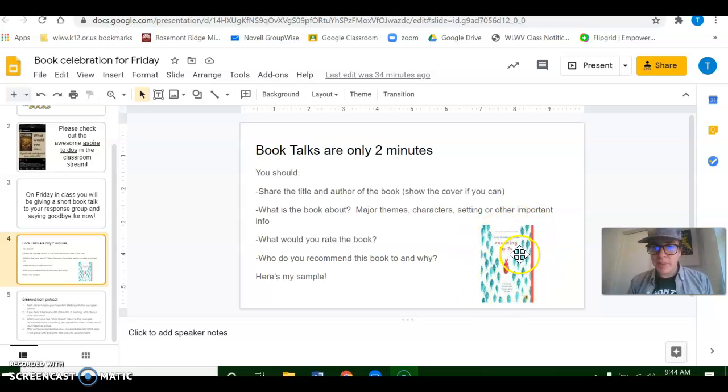Hello, I'm going to tell you a little bit about the book Counting by Sevens by Holly Goldberg Sloan. The book is about the main character Willow. She's 12, kind of a genius, and she's obsessed with the number seven.